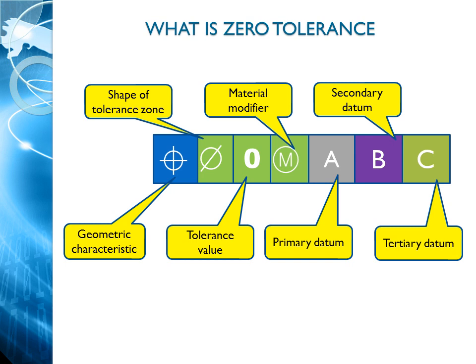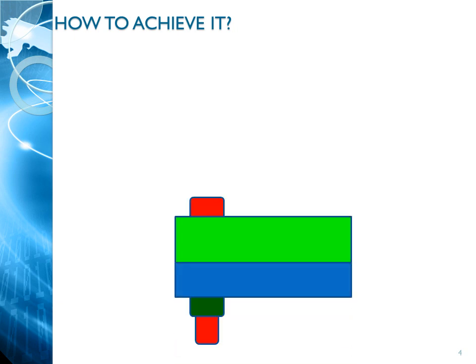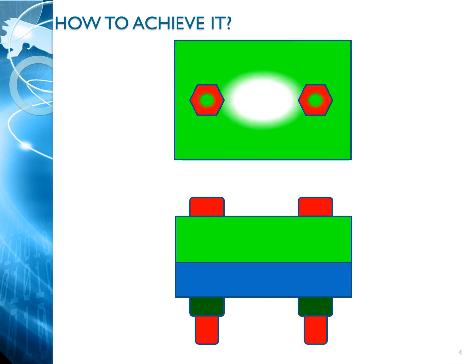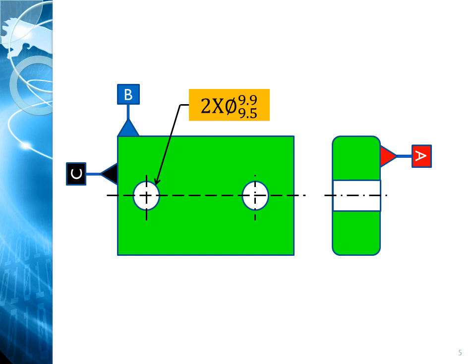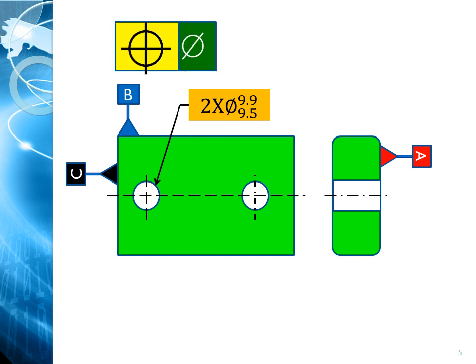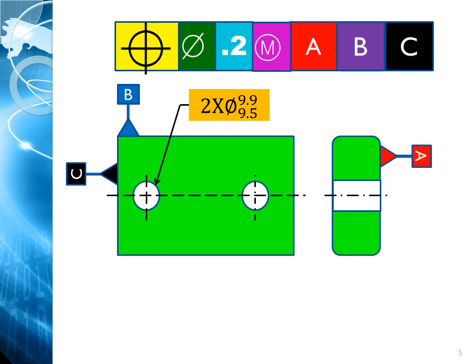Let's understand how we can achieve it with a case study. We have a two-plate assembly which is assembled through a fastener and a nut. Taking one of the plates with two holes, let the bottom surface be datum A, the length be datum B, and datum C along the width. The size of the hole is 9.9 to 9.5 for both holes, and position tolerance is cylindrical diameter 0.2 at MMC with respect to primary datum A, secondary datum B and tertiary datum C.